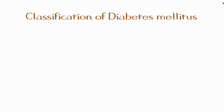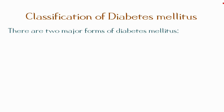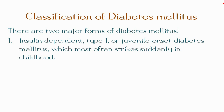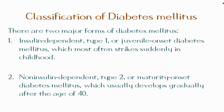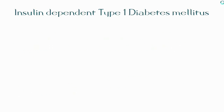Now let's move on to the classification of diabetes mellitus. There are two major forms: first, insulin-dependent type 1 or juvenile-onset diabetes mellitus, which most often strikes suddenly in childhood; and second, non-insulin-dependent type 2 or maturity-onset diabetes mellitus, which usually develops gradually after the age of 40.